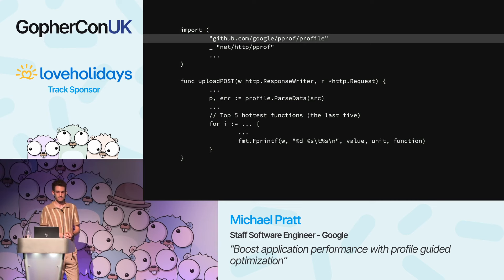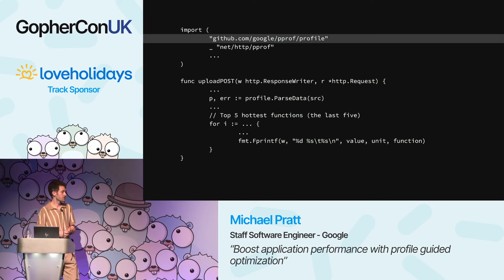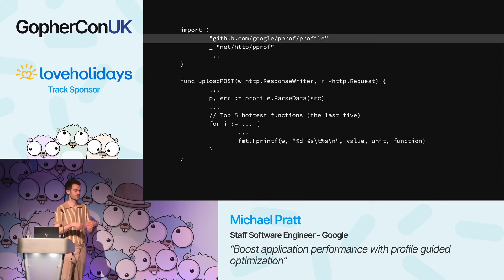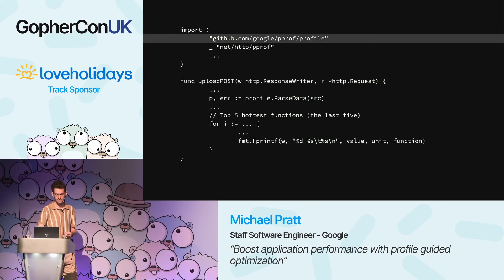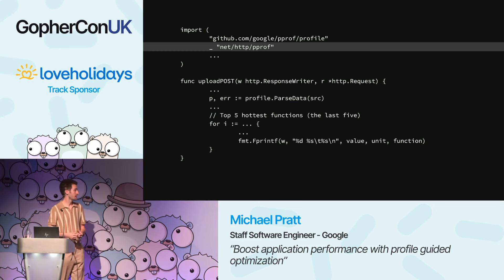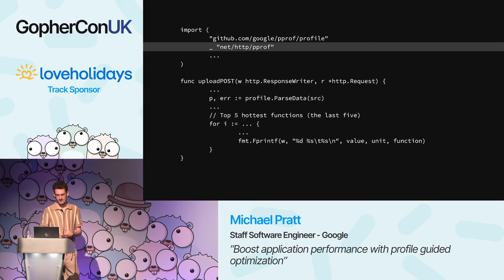This is a standard net/http server. In the request handler it reads the request body, parses it as a pprof profile, does some processing to group data by function, and responds with the five hottest functions it finds. Worth noting is the pprof package, which allows parsing profiles within your own applications — the same tool you'd use with go tool pprof. Also notable is the net/http/pprof import: simply importing this package adds HTTP endpoints to the default mux handler that can collect profiles.